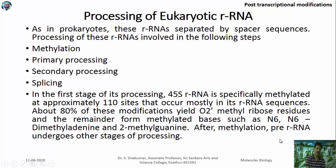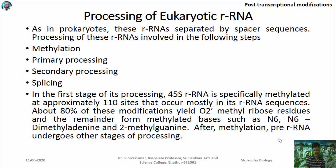Both prokaryotic rRNA and tRNA undergo methylation. Similarly, eukaryotic rRNA is processed by methylation, primary processing, secondary processing, and additionally by splicing. Methylation of eukaryotic rRNA occurs at about 100 sites. Approximately 80% of these modifications yield 2'-O-methyl residues, while the remainder includes N6,N6-dimethyladenine and pseudouridine residues.